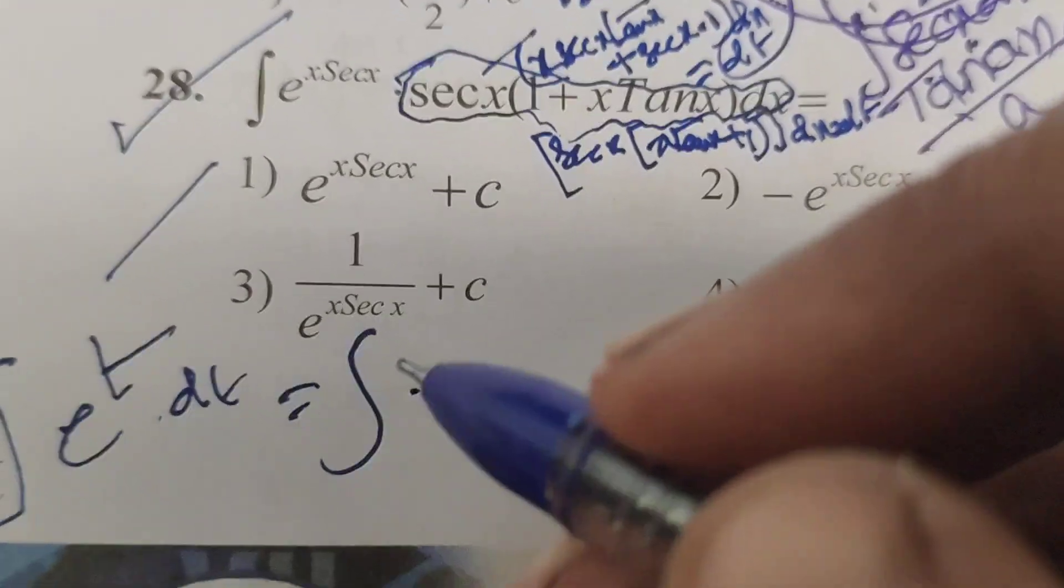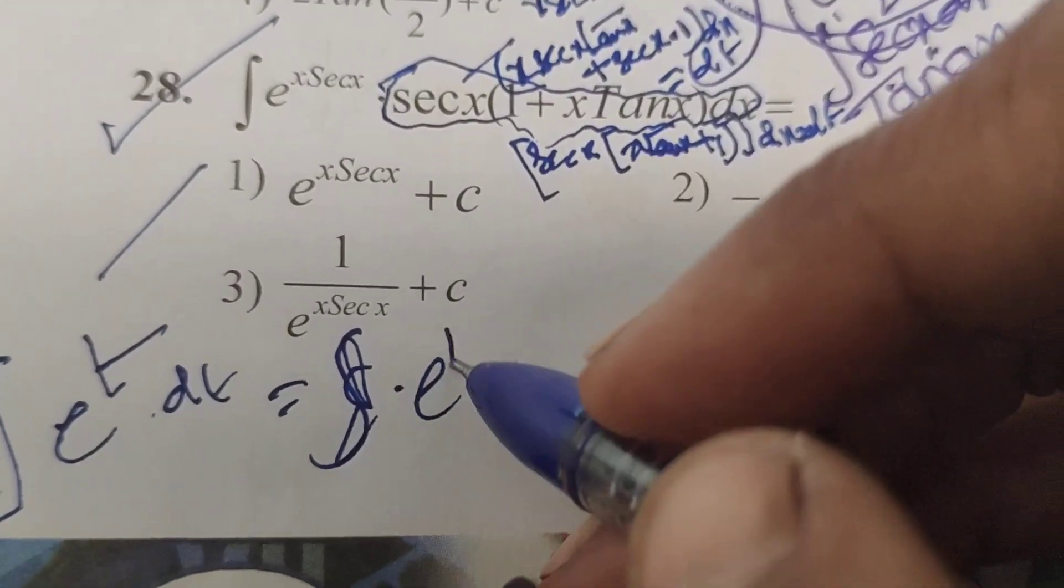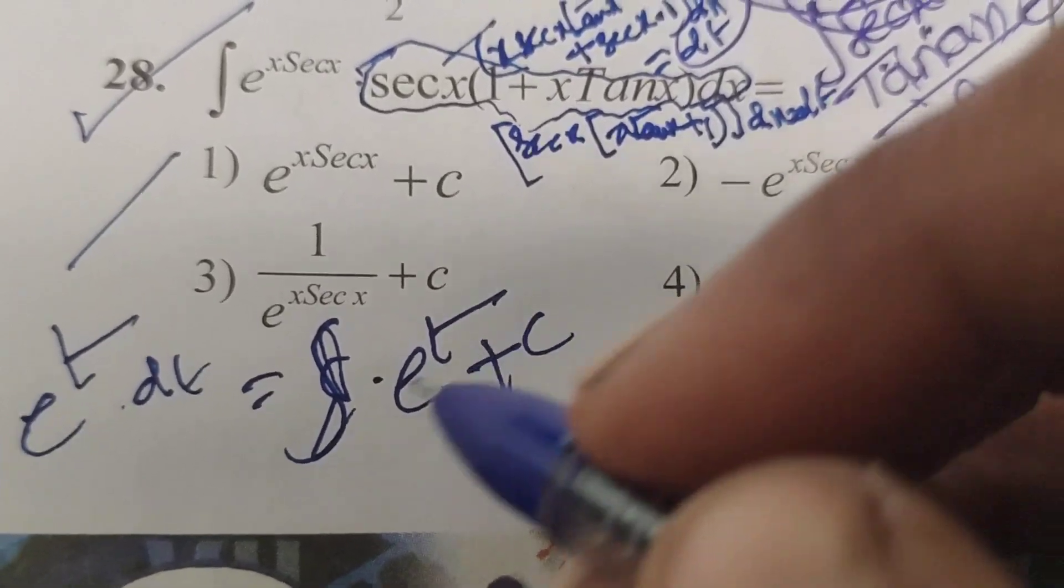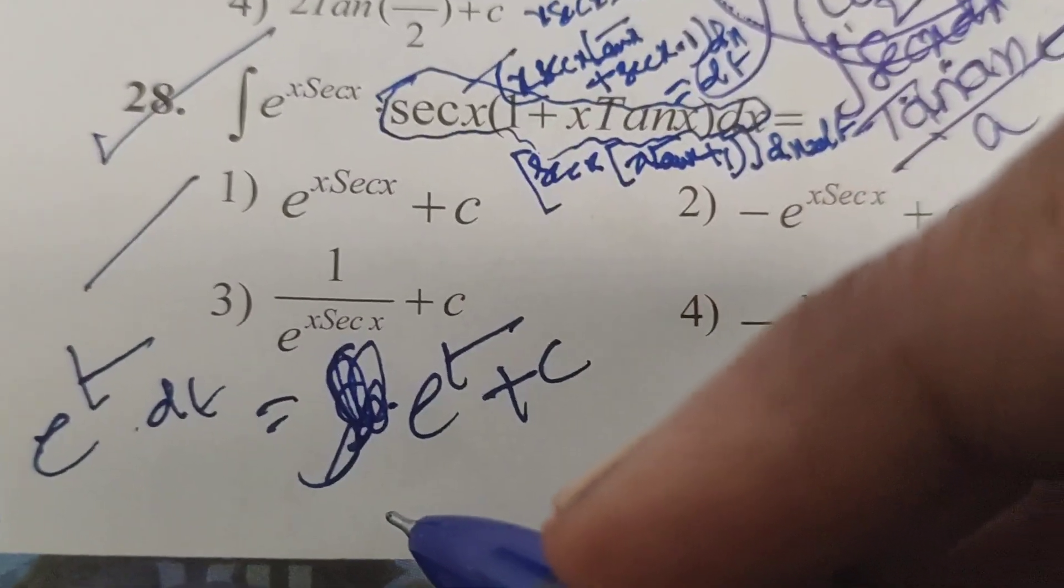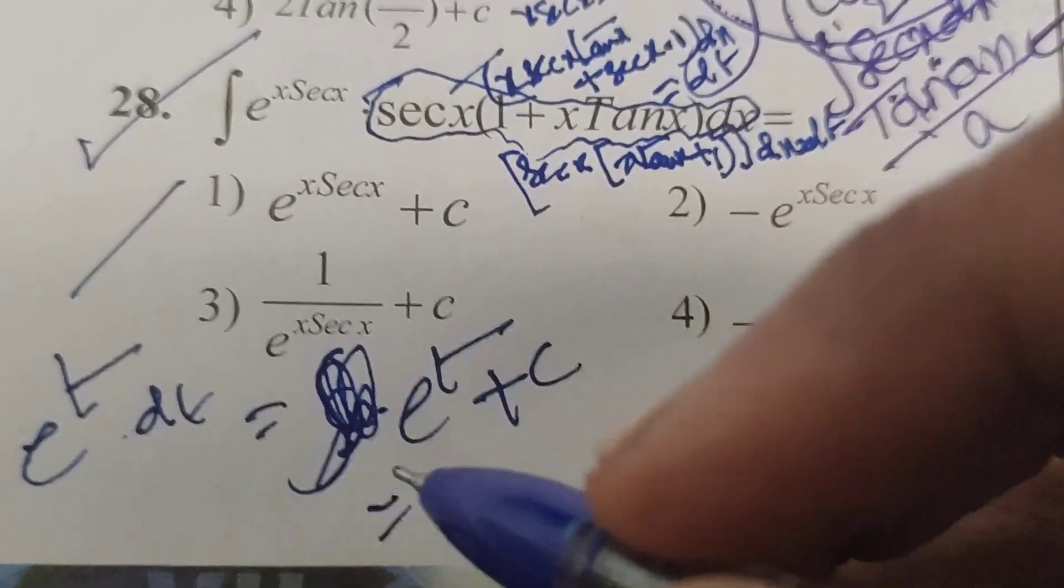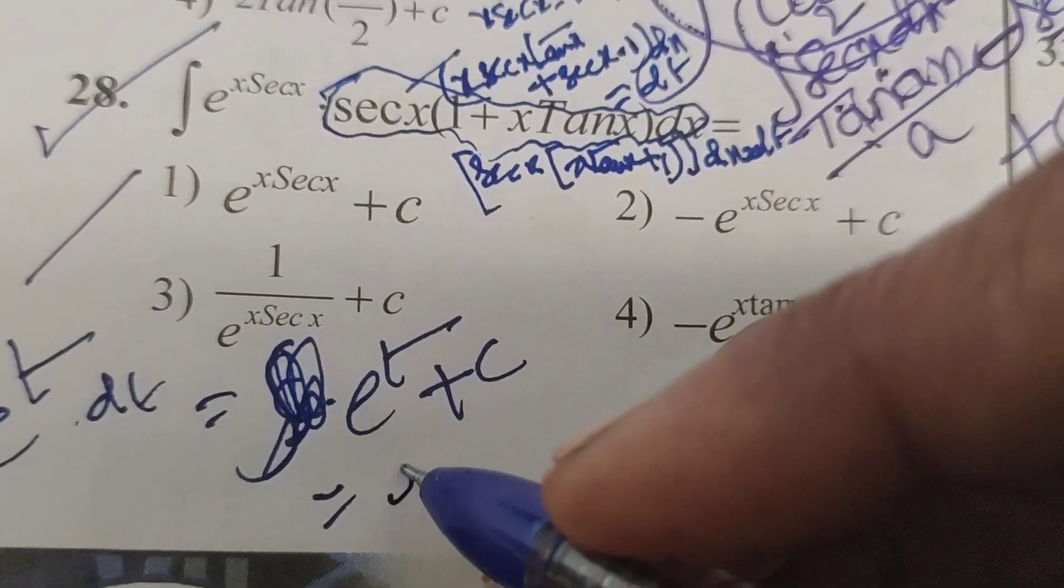Therefore now integrate this again: e^t plus c. After integration, now removing this integration symbol. Then here e power.